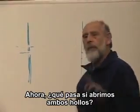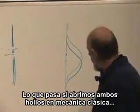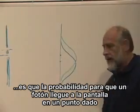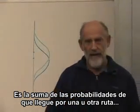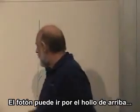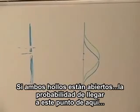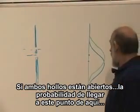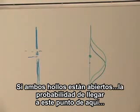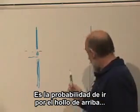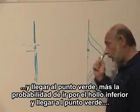Now, what happens if we open both holes? What happens if you open both holes in classical mechanics is the probability for a photon to get to the screen at any given point is the sum of the probabilities for it to get there by either route. The photon can either go through the upper route or it can go through the lower route if both holes are open. The probability to get to the green point over here is the probability to go through the upper hole and arrive at the green point, plus the probability to go through the lower hole and arrive at the green point.